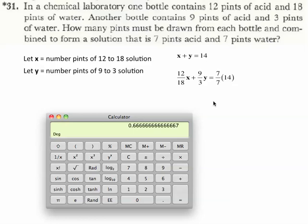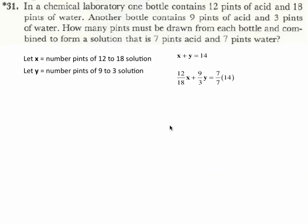So to do that, what I'm going to do is I'm just going to simplify this. The 9 divided by 3 is of course 3. 12 eighteenths reduces to 2 thirds. So we have 2 thirds X plus 3Y is equal to 14.